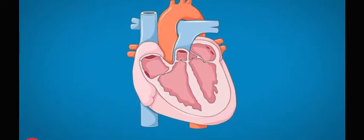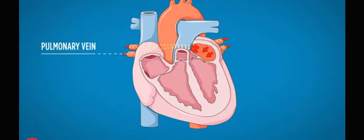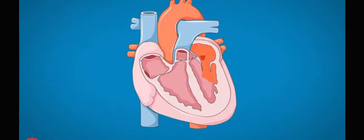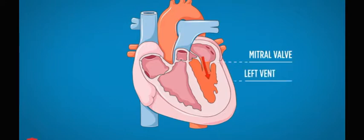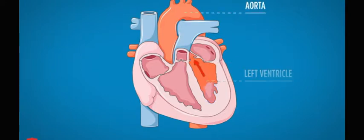The oxygenated blood returns back to the heart through the pulmonary vein and into the left atrium. It goes through the mitral valve and finally into the left ventricle, which is responsible for pumping the oxygenated blood through the aorta and out to the body.